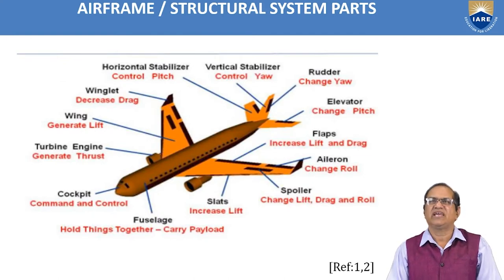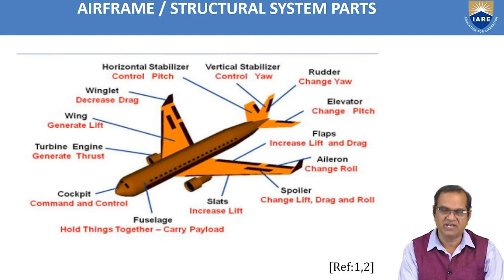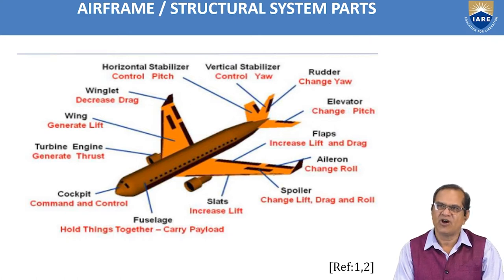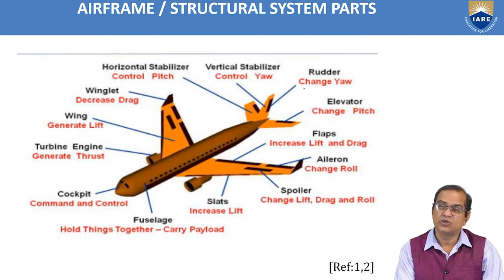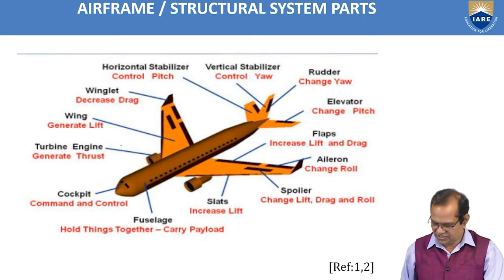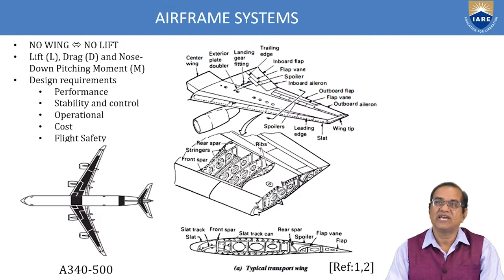Next: the airframe and structural system parts. Starting from the cockpit, then the fuselage which holds things together and carries the payload. Slats increase lift; spoilers change lift, drag, and roll; ailerons change roll; flaps increase lift and drag; elevators change the pitching — nose up and nose down; rudders change the yaw — nose left or right; the vertical stabilizer controls yaw; horizontal stabilizer controls pitch; winglets decrease drag; the wing generates lift; and the turbine engine generates thrust.